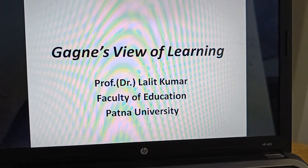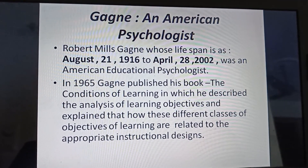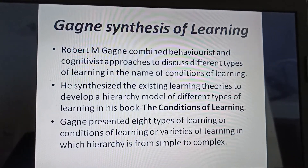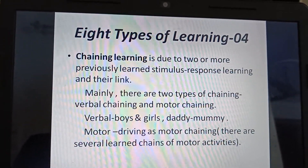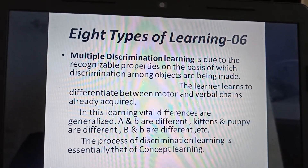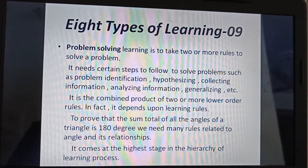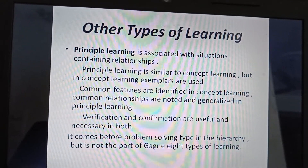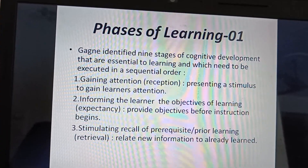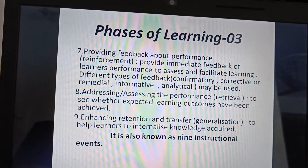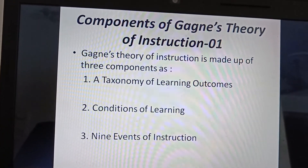We shall be trying to understand about Gagné as a human being and also as a psychologist. Then, as we have told, eight types of learning — these are presented across different slides. These are the eight types, and one additional type, principle learning, which is not strictly part of Gagné's original list but is considered very important, will also be discussed. Then nine phases of learning, and then five varieties or categories of learning. And then components of Gagné's theory for instruction.